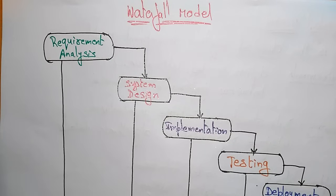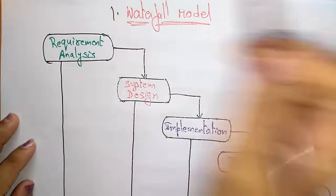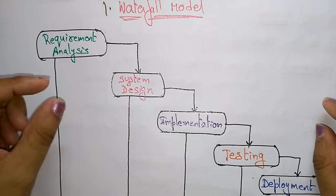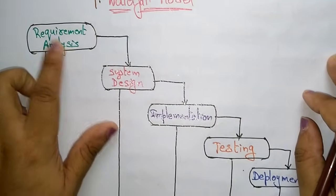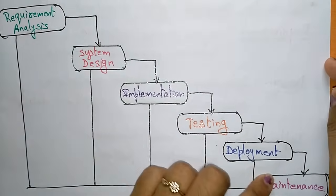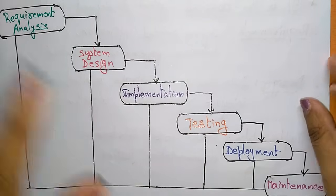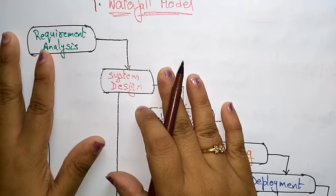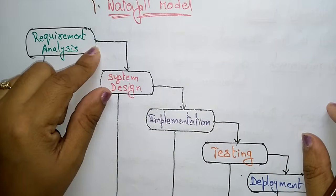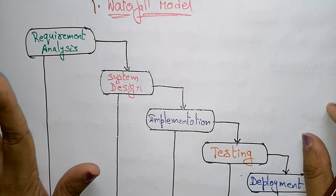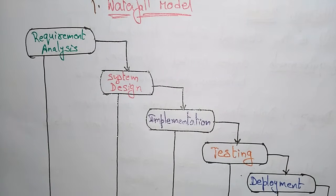Coming to the different types of software lifecycle models, the first one is the waterfall model. In the waterfall model, you have different phases: requirement analysis, system design, implementation, testing, deployment, and maintenance. This is the first software development lifecycle model to be used widely in software engineering to ensure success of the project.